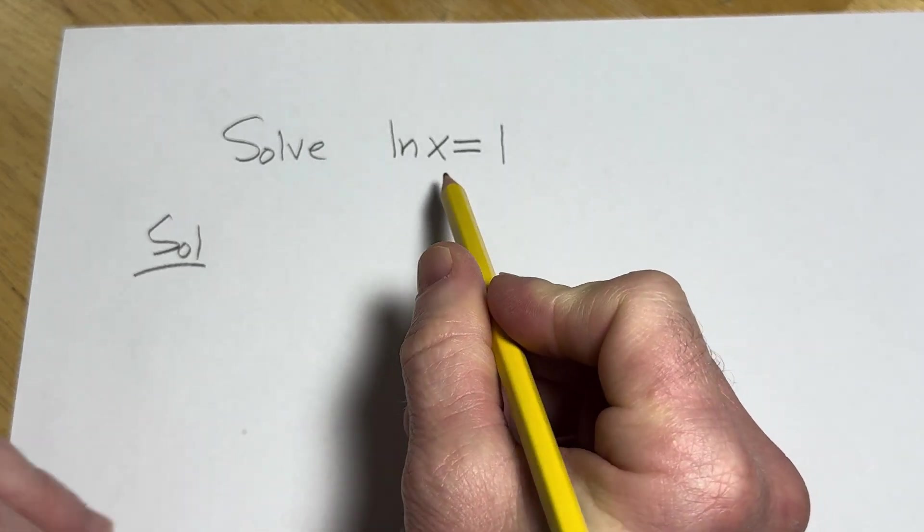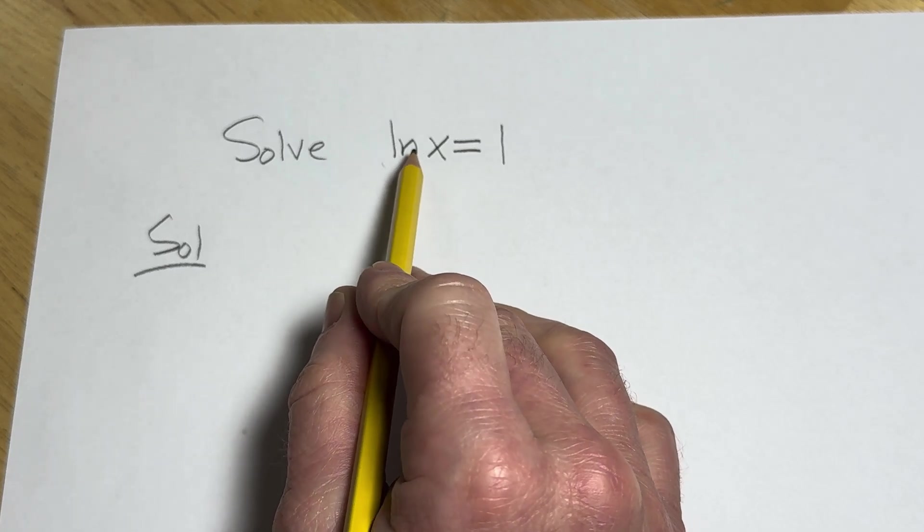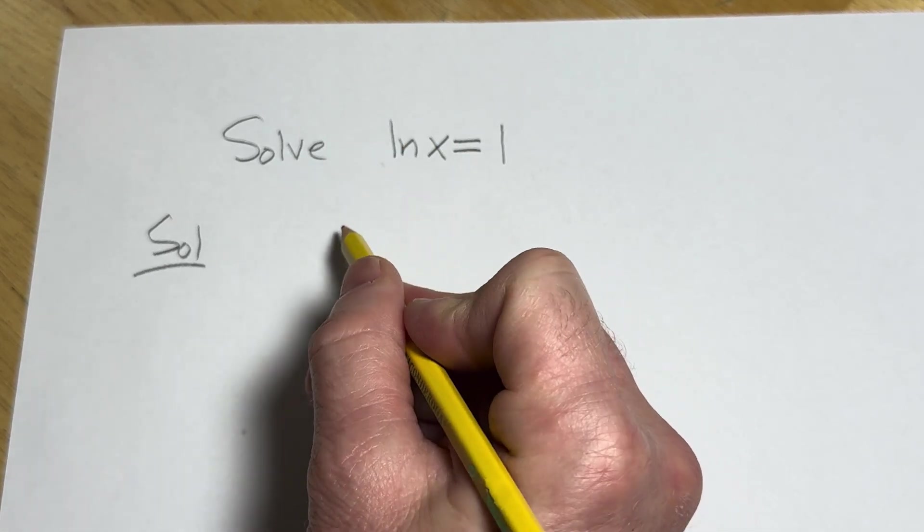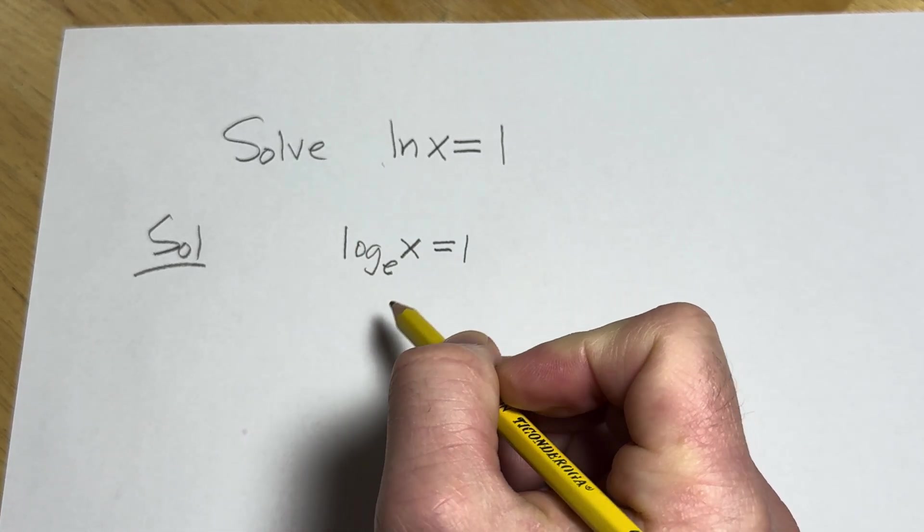Solution. So whenever you see ln x, it's really log and the base is e. So we could rewrite this original problem as follows. It's log base e of x equals 1.